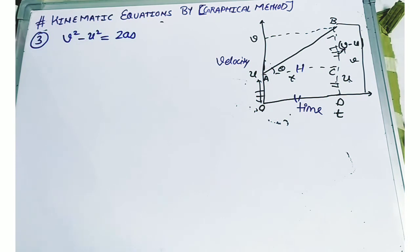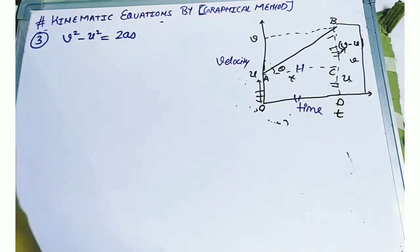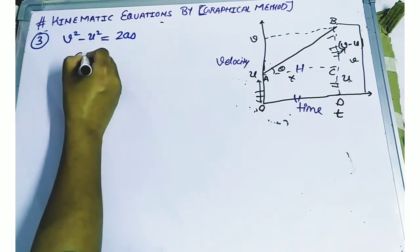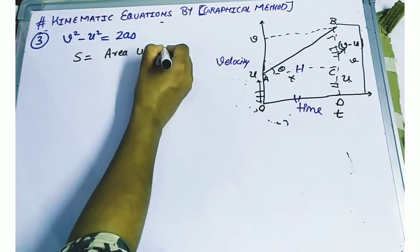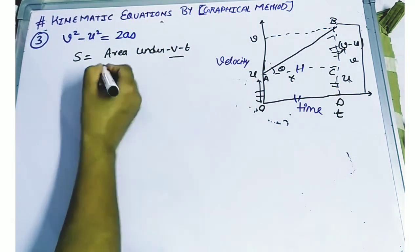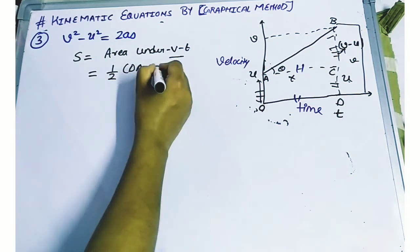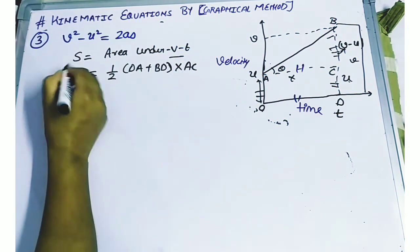Now we are going to talk about the third equation of motion. The third equation will give us the velocity attained by the object after travelling a distance S. We have already seen that S is the area under the v-t graph, and that area is a trapezium. So S equals half of (OA plus BD) into AC.